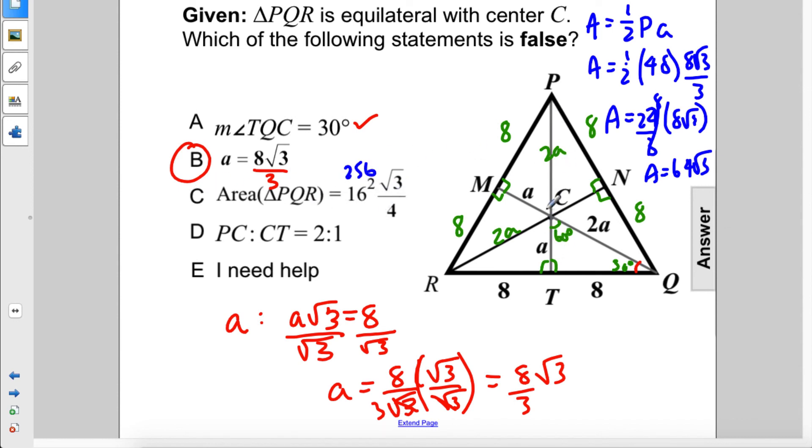And here you can see that PC is 2A, CT is A. That is a 2 to 1 ratio. So that is also true. The answer to this problem is B.